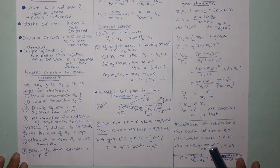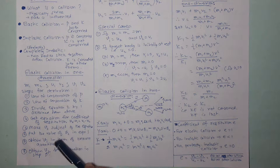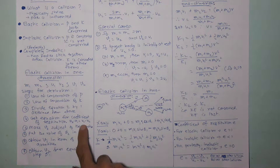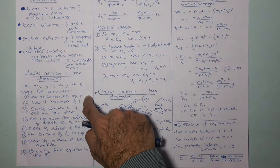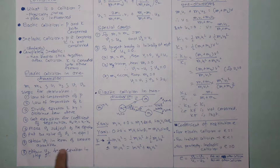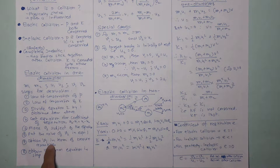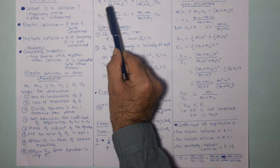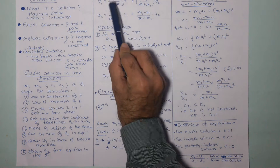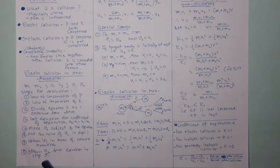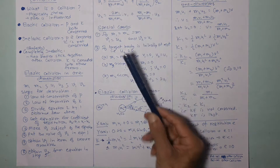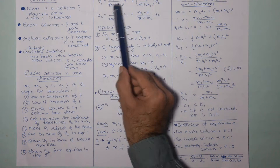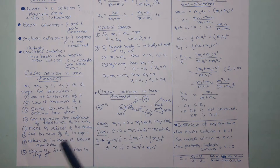From this equation, make V2 the subject: V2 = U1 − U2 + V1. Substitute this into equation 1 to obtain V1 in terms of known quantities M1, M2, U1, and U2. Then substitute V1 back to obtain V2. Finally, you get V1 and V2 expressed in terms of masses and initial velocities — which is the objective of this derivation.